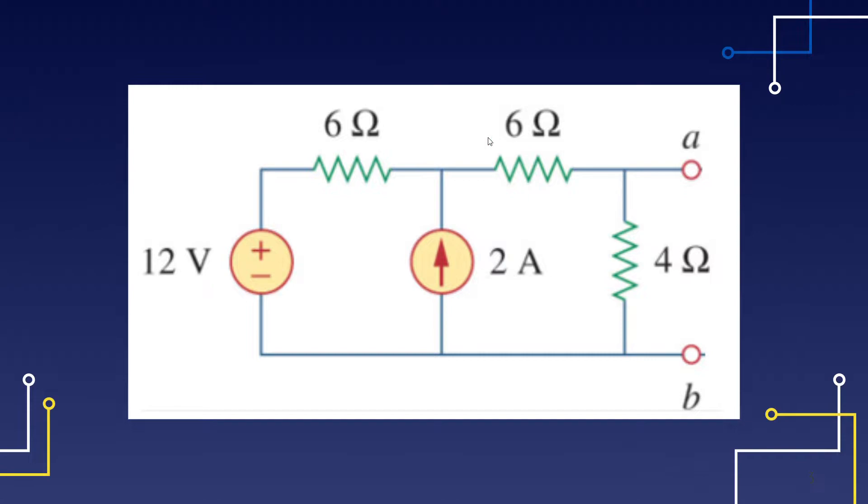This is the circuit that we're going to be working with. We have a 12 volt voltage source, two 6 ohm resistors in series and one 4 ohm resistor in parallel, and we also have a 2 ampere current source.